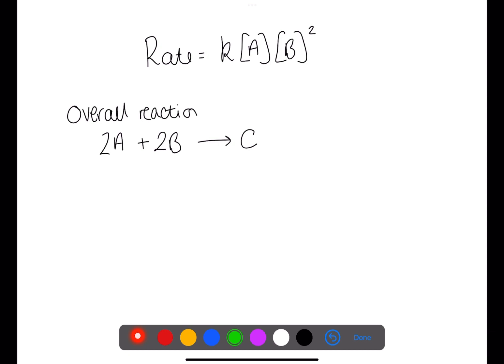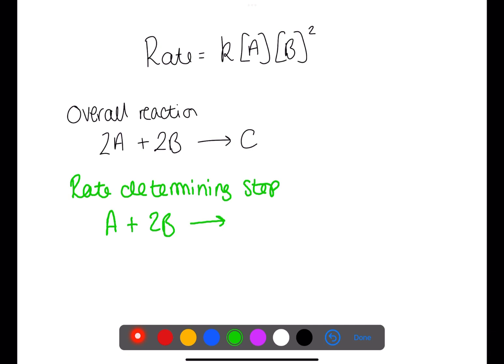The rate equation represents the rate determining step. This is the slowest step in the reaction. Where you have the rate determining step and an overall reaction, you can work out what the reaction mechanism would be. In this case, the rate determining step happens when one molecule of A reacts with two molecules of B to make an intermediate X. From the overall reaction, we can see that we still have a molecule of A which has not been used. This molecule of A will react with the intermediate X to give the final product C.